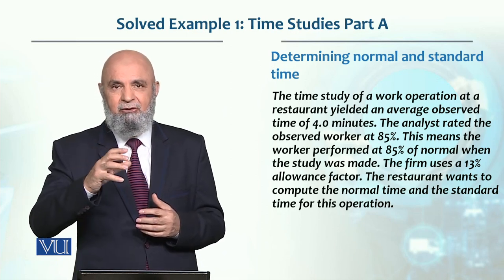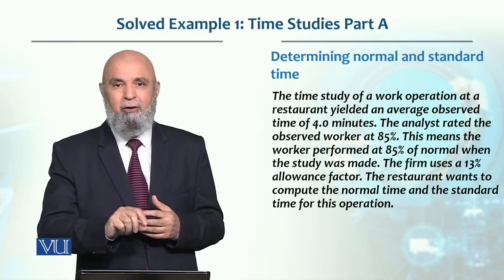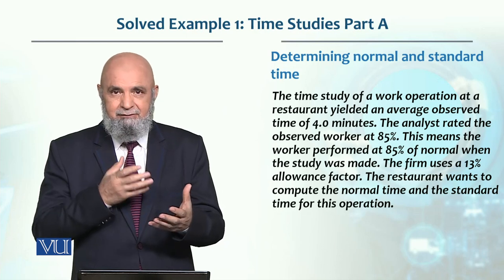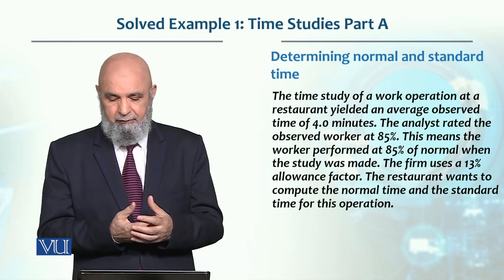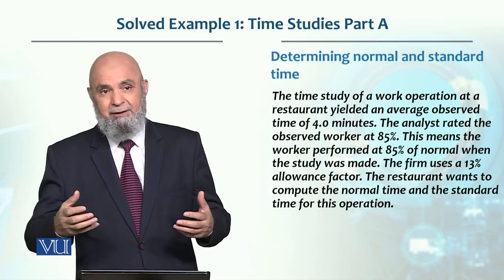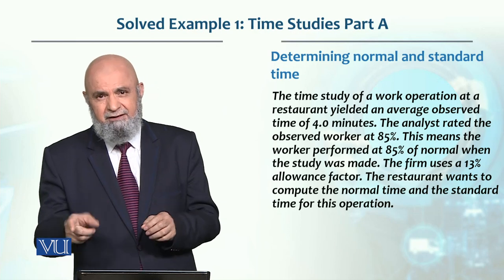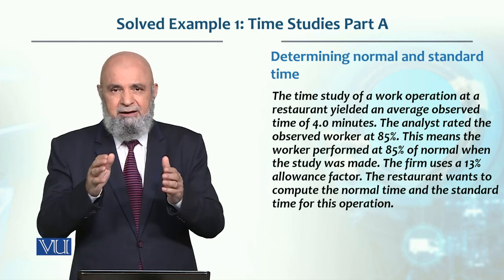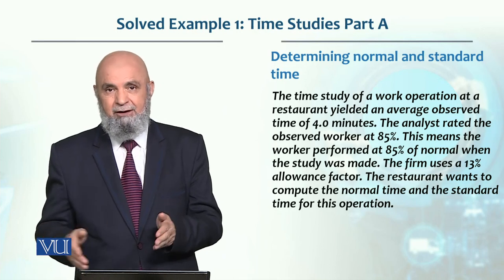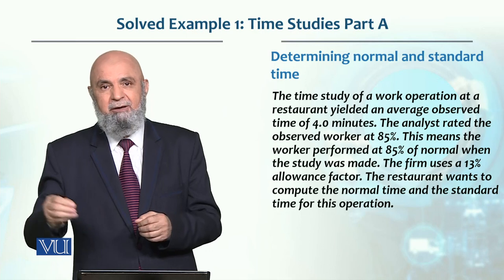उस normal time को आपने कम करना है, तो 0.85 से multiply कर देंगे। अगर जो उसकी rating है वो 110% है, तो that means that worker was 10% faster — उसने एक normal person के मुकाबले में जल्दी काम कर दी, तो उस time को हमने 1.1 से multiply करके उसको increase करना है।